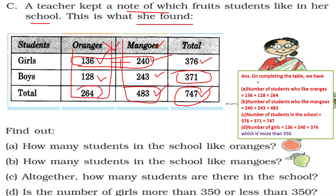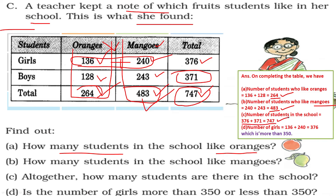On completing the table: the number of students who like oranges is 264. The number of students who like mangoes is 483. The total number of students in the school is 747. The number of girls is 376. Is the number of girls more than 350?